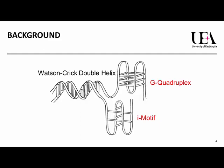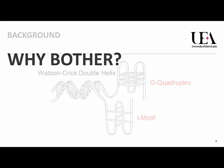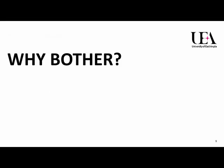However, DNA can actually form many different types of structures, and this is what this research publication is about. On the right-hand side of the slide I have two different types: the top is a four-stranded structure called the G-quadruplex, and below that is another four-stranded structure called the i-motif — that's the particular structure we're interested in and which is involved in this publication. Why bother with these different types of DNA structures? Well, alternative DNA structures are thought to potentially play a role in the development of particular genetic diseases, for example diabetes or cancer.